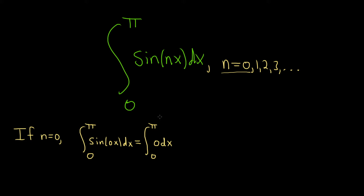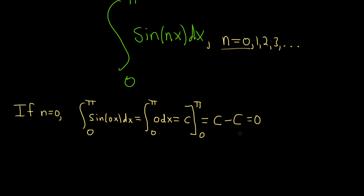Sine of 0 is 0, so we have 0 dx. When you integrate 0, you get a constant, and we're going from 0 to pi. When you plug in pi, there's nothing to plug it into, so you just get c. You subtract and plug in 0, so you also get c. c minus c is 0. So when n equals 0, we get an answer of 0.